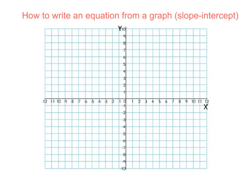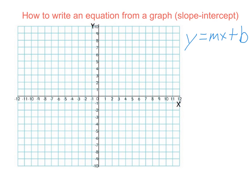Hello, mathematicians. In this video, we're going to find out how to write an equation from a graph. This is in slope-intercept form, so our equation is going to look like this: y equals mx plus b, where m is going to be the slope, and b is the y-intercept.